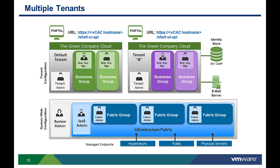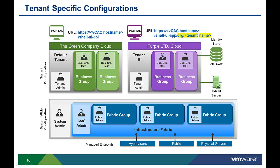Additional tenants will have the same URL, branding, email server, and authentication and identity store, unless they are specifically customized. However, each tenant admin can override the default tenant settings. For example, they can have their own unique branding and URL with the tenant name as part of that URL. They can also have their own identity stores and email routers.